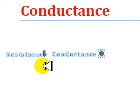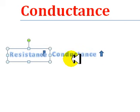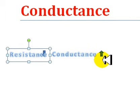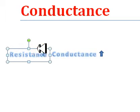As resistance decreases, more current can be carried. Resistance goes down, conductance goes up. When the current goes up — boom! — it makes it more conductive. Think of it that way, so you won't get confused.